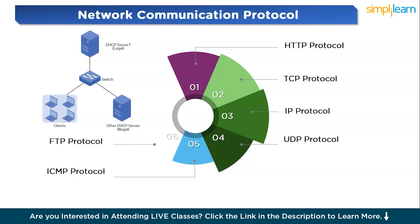ICMP — Internet Control Message Protocol — is used for diagnostic and error reporting purposes. It helps detect network connectivity issues and ensures data packets reach their destination. ICMP is used by network devices to send error messages and is commonly utilized by tools like ping and traceroute to test network latency and packet loss. For example, if a website is unreachable, running 'ping example.com' will use ICMP to check if the server is responding.